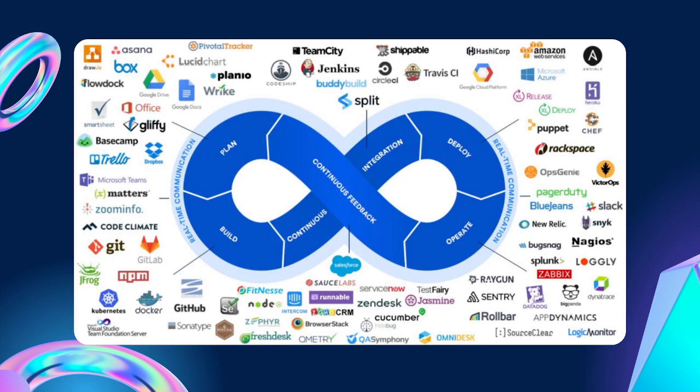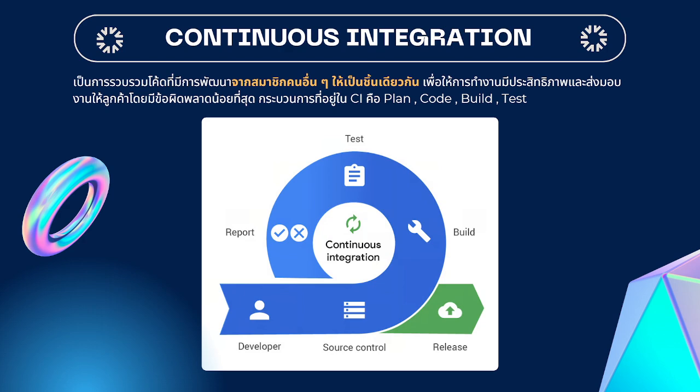This is the pipeline that we can use in order to make a plan. Continuous Integration, or CI, is used in order to make a difference in the workflow.